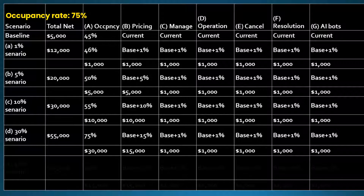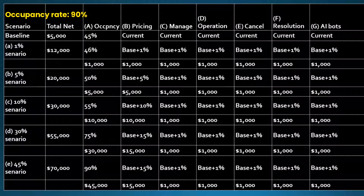Let's be moderate and assume that we can increase fifteen percent on sold prices in Scenarios D and E. In Scenario D, the net profit is fifty-five thousand dollars, or fifty-five percent a year, under the assumption of a seventy-five percent occupancy rate. In Scenario E, the net profit is seventy thousand dollars, or seventy percent a year, under the assumption of a ninety percent occupancy rate. In comparison with five thousand dollars, the seventy thousand dollar net profit is fourteen times five thousand dollars — it is more than a thirteen hundred percent increase. Here we simplify the figures and details for easier understanding.